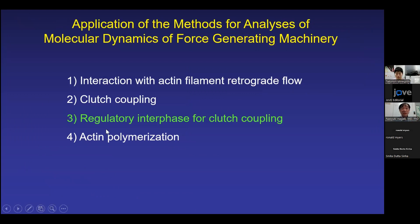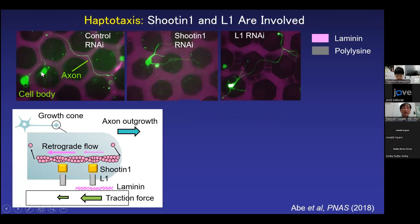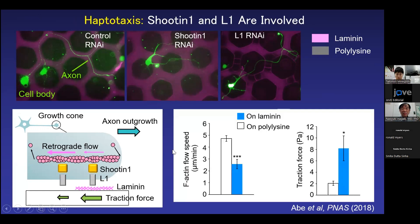Speckle imaging can also further identify the regulated interface for clutch coupling. Actin flow speed is decreased on laminin and traction force is increased on laminin. This indicates that laminin promotes clutch coupling.